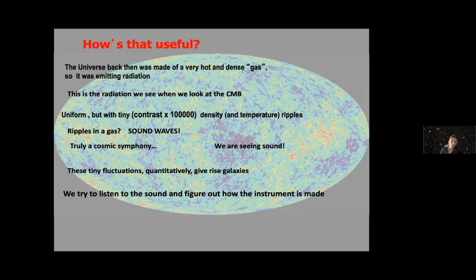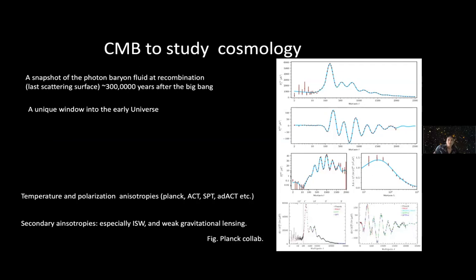The CMB has been extremely useful to study cosmology. It's a snapshot of the photon-baryon fluid at recombination about 300,000 years after the Big Bang. It's a unique window into the early universe. The temperature and polarization anisotropy has been scanned with high precision by Planck, and ground-based experiments like ACT, SPT, Advanced ACT Polarization. This picture shows how exquisite the data points are.